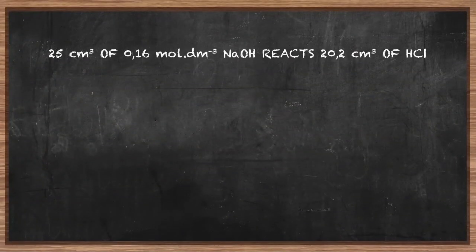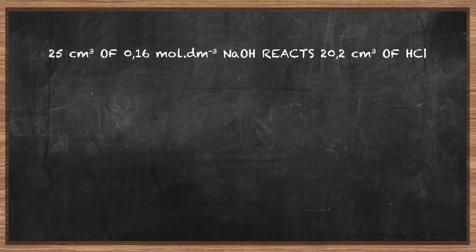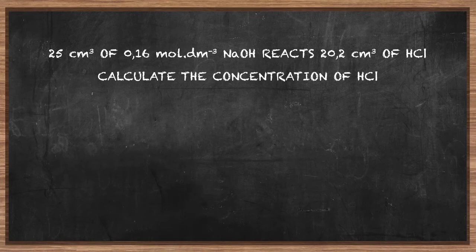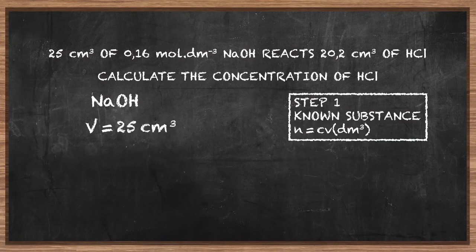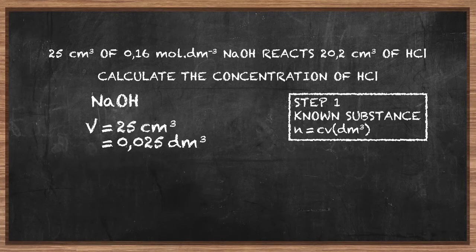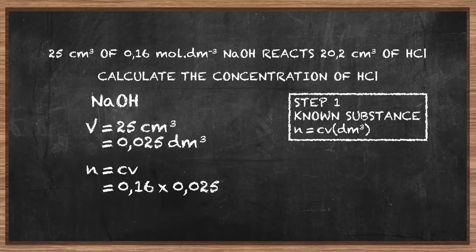25 cm³ of 0.16 mol per decimetre cubed sodium hydroxide reacts with 20.2 cm³ of hydrochloric acid. Calculate the concentration of hydrochloric acid. Let's calculate the number of moles of sodium hydroxide. 25 cm³ represents 25 divided by 1000 = 0.025 decimetres cubed. The number of moles of sodium hydroxide equals its concentration times its volume: 0.16 × 0.025 = 4 × 10⁻³ mol.